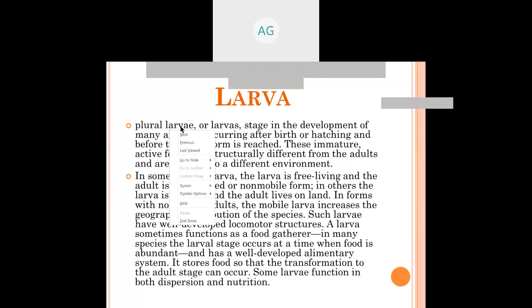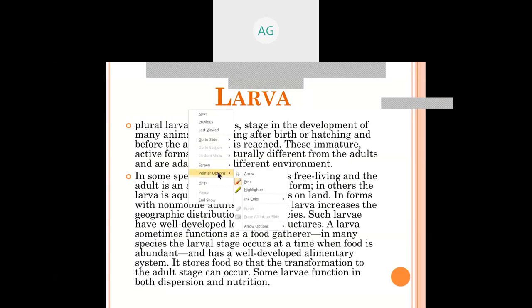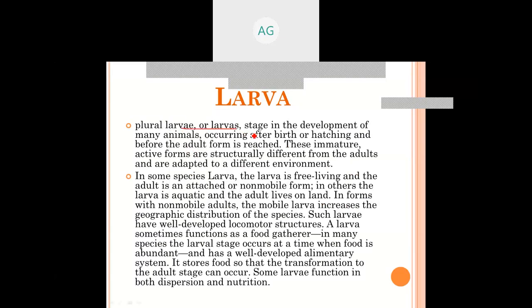Larva is a singular word — the plural is larvae. The larval stage is one stage of the life cycle of many animals, not all animals, occurring after birth or hatching and before the adult form is reached. The sequence is: egg, larva, pupa, and adult — this is complete metamorphosis. In incomplete metamorphosis, the larva and pupa stages are not present as such.